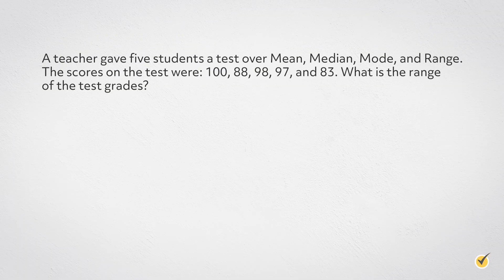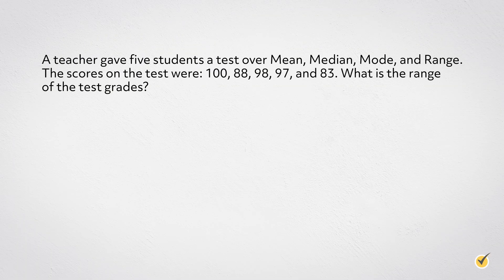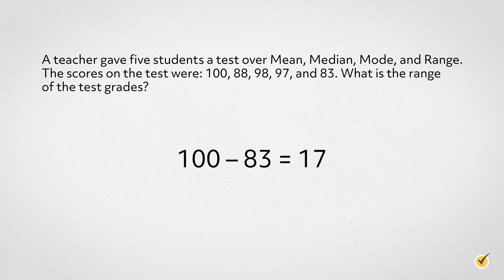Let's try one more example, this time applying it to grades like we did earlier. A teacher gave five students a test over mean, median, mode, and range. The scores on the test were 100, 88, 98, 97, and 83. What is the range of the test grades? The range is 100 minus 83, which equals 17. The range is low and the test grades are high, so everyone did really well on the test.